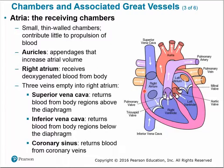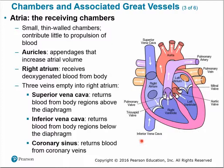The right atrium receives deoxygenated blood from the body via the systemic circuit through three veins: the superior vena cava returns blood from body regions above the diaphragm, the inferior vena cava returns blood from body regions below the diaphragm, and the coronary sinus returns blood from the coronary veins — the functional blood supply to the heart itself.